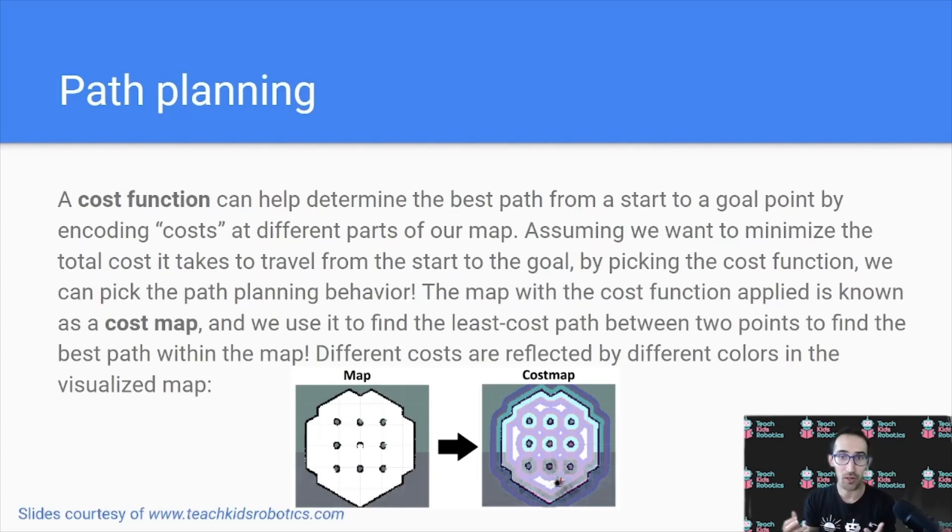A map with a cost function applied to each point inside is known as a cost map, and we can use this cost map to find a least cost path between two points in the map that we wish to travel between. And we will use this cost function to find the best or the lowest cost path between the two points. And we have a visualization here of what a map looks like with a cost map equivalent, and you can see for example, we have additional costs indicated by the darker purple colors associated with being near an obstacle, and the free space is at lower cost indicating we prefer to move in this area.